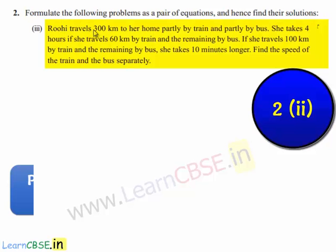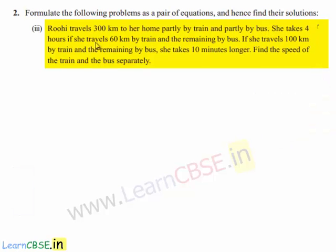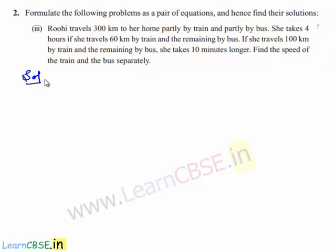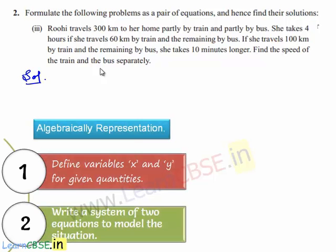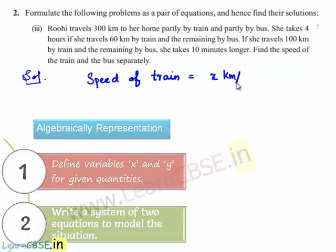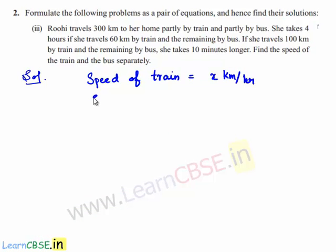Coming to the third problem: Ruhi travels 300 km to her home, partly by train and partly by bus. She takes 4 hours if she travels 60 km by train and the remaining by bus. If she travels 100 km by train and the remaining by bus, she takes 10 minutes longer. Find the speed of the train and bus separately. Let speed of train = x km/hr and speed of bus = y km/hr.